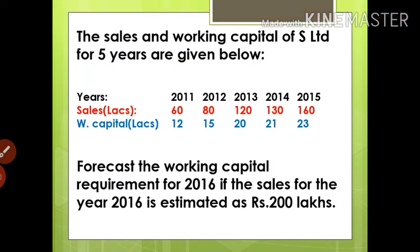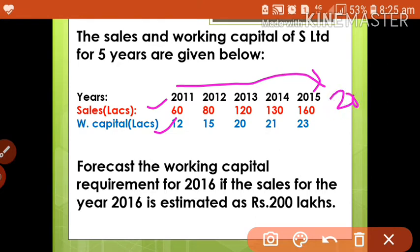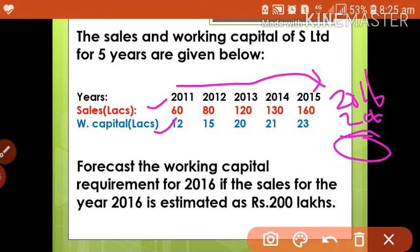This is the model question. The sales and working capital of S Limited for five years are given. We have to forecast the working capital requirement for 2016 — that is, what will be the working capital requirement if the sales is 200. We are given the value of sales but not the working capital, so we have to calculate the working capital for 2016 based on the sales value of 200.